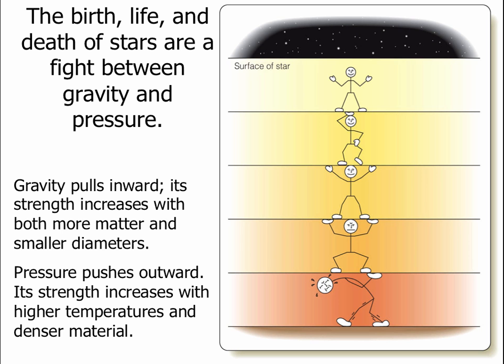Back when we talked about the sun, we discussed how its structure is determined in large part by the balance between gravity pulling the sun's outer layers down, and pressure of the inner layers pushing up to keep the sun from collapsing. During the birth, life, and even death of stars, everything is dominated by this interaction between gravity trying to shrink the star smaller and pressure trying to push the star back out again. Which of these dominates at each stage of the star's life determines what the star looks like.